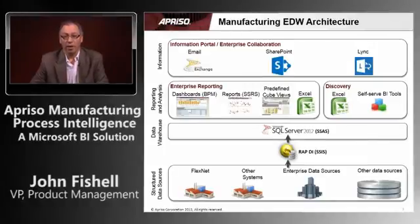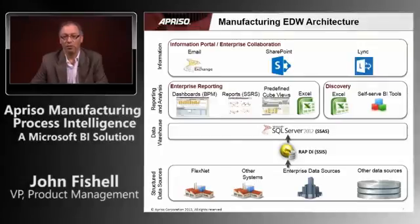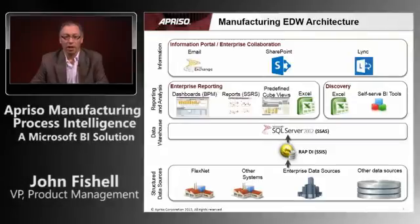From an architectural point of view, MPI has several key layers. On the bottom, we have structured data sources — interfaces to FlexNet systems, other plant-level systems, enterprise ERP systems for master data, and various other data sources. This is where our RAP or Reporting Analytics Platform interfaces with. On top of that, we have a component in RAP called RAPDI, or Data Integrator, leveraging Microsoft technology and built on SSIS. We built wizards and rapid interface tools to handle data acquisition, data formatting, and pushing data into the data warehouse. The data warehouse itself is a SQL Server solution supporting SQL Server 2012 or 2008, and it must run on Enterprise Edition. It can be either a central data warehouse, distributed by region, or done plant by plant, depending on what the customer wants.